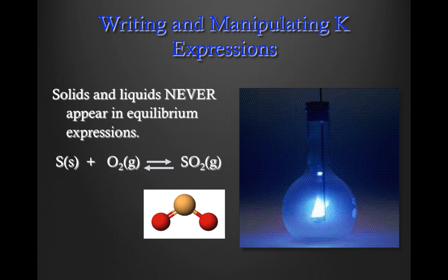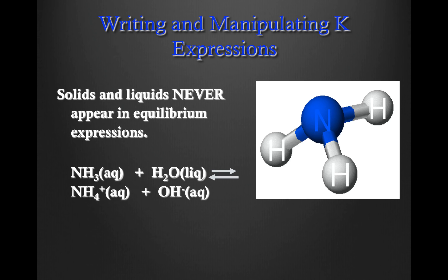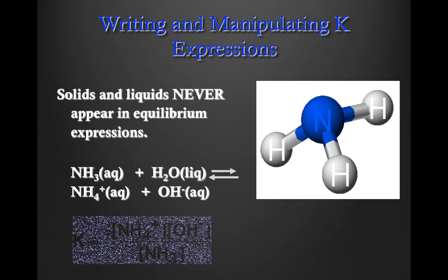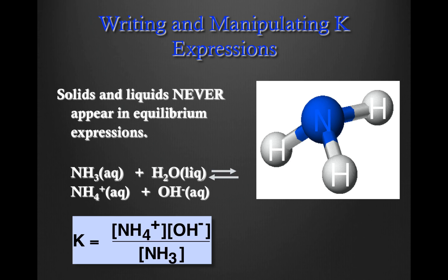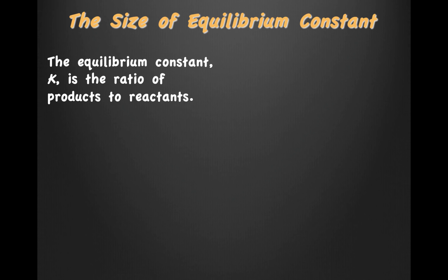Solids and liquids are never included in equilibrium expressions. Consider what the equilibrium expression would be for this reaction — we're going to totally ignore the sulfur, because sulfur is a solid. In this next example, look at what we're going to ignore: we're not going to include the water. The equilibrium constant K is the ratio of products to reactants.